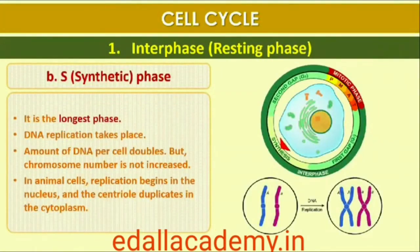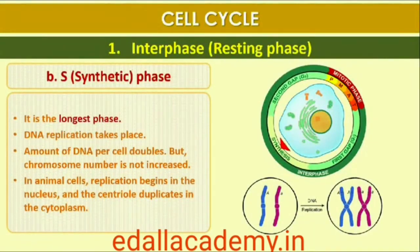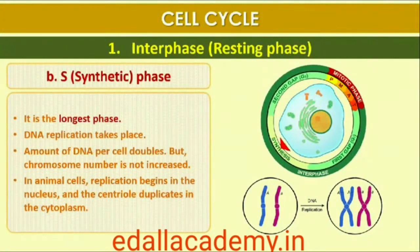The S (Synthesis) phase marks the period during which DNA synthesis or replication takes place. During this time the amount of DNA per cell doubles. If the initial amount of DNA is denoted as 2C, then it increases to 4C. However, there is no increase in the chromosome number — if the cell had diploid or 2N number of chromosomes at G1, even after S-Phase the number of chromosomes remains the same, that is, 2N.